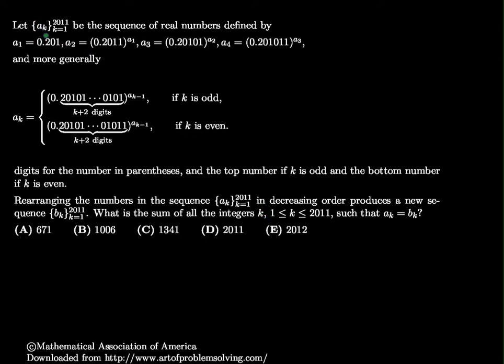This says, let a sub k, as k goes from 1 to 2011, be the sequence of real numbers defined by a_1 equals 0.201, a_2 equals 0.201 to the a_1, a_3 equals... and they give me a piecewise recursively defined sequence. More generally, digits for numbers in parentheses.